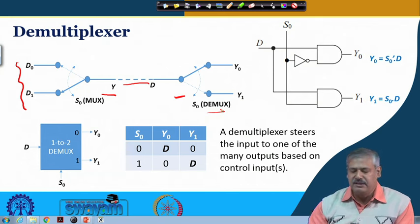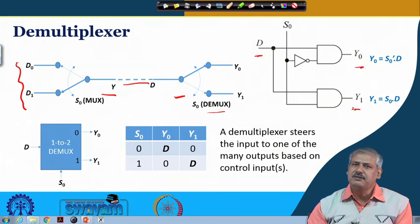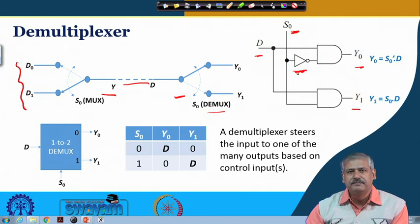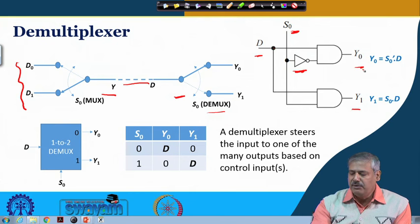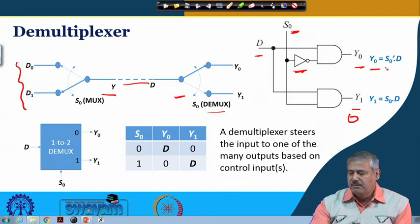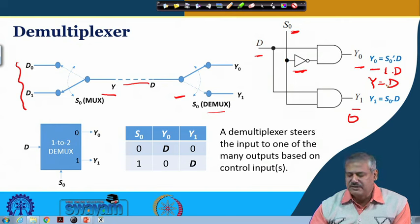For a 1-to-2 demultiplexer, we have one input and two outputs. The circuit is similar to what we had done in the case of multiplexer. This is the select input. When select input is low, D will be steered towards Y0. At that time Y1 is always at 0, and Y0, because select is 0, gets the value 1 AND D. So whatever is the value of D goes to Y0, and whenever D changes from 0 to 1, Y0 will also change accordingly.